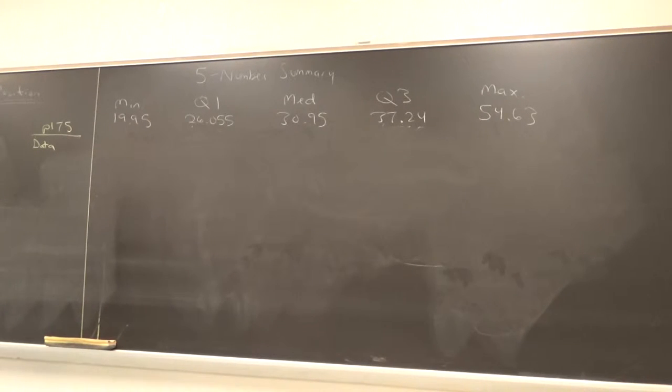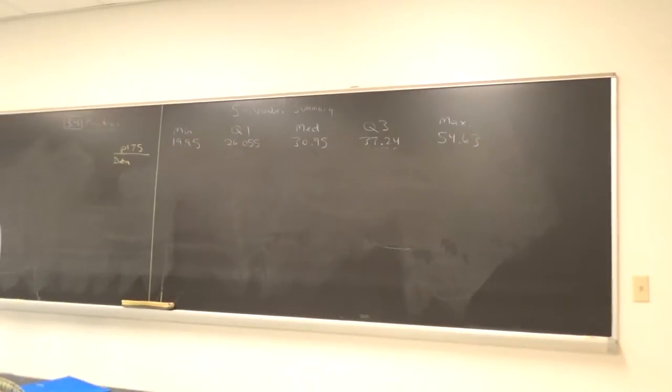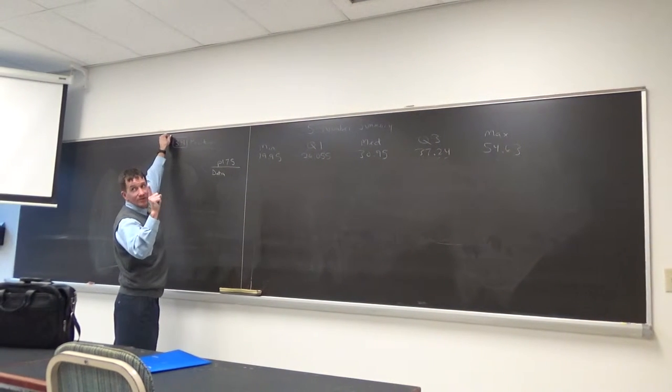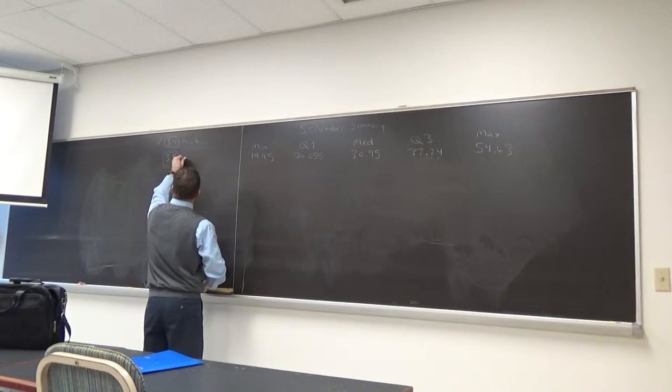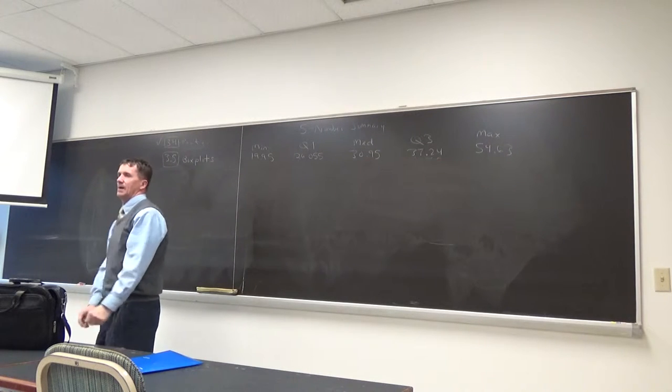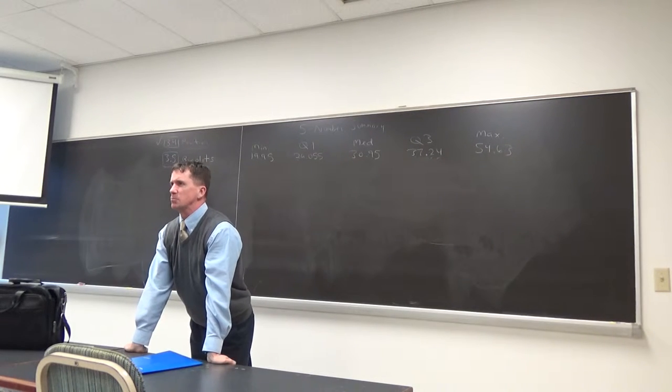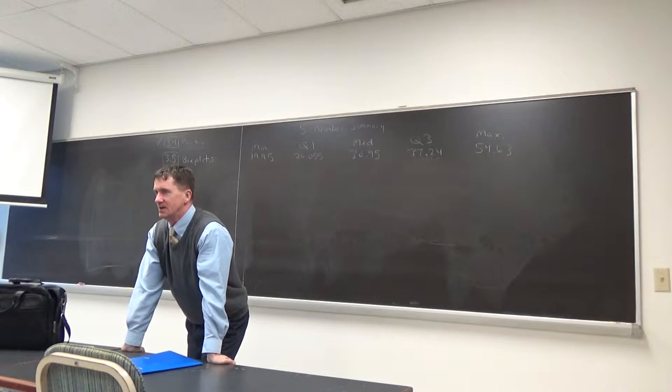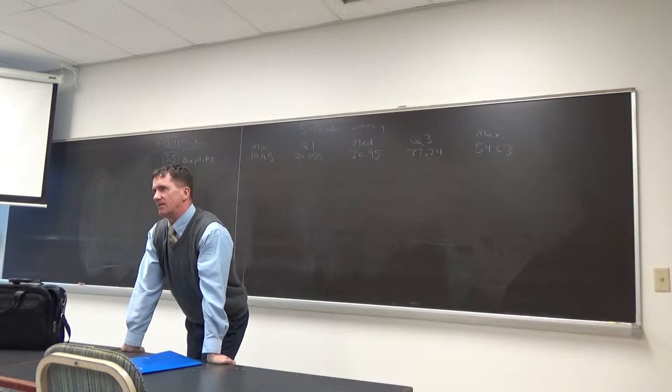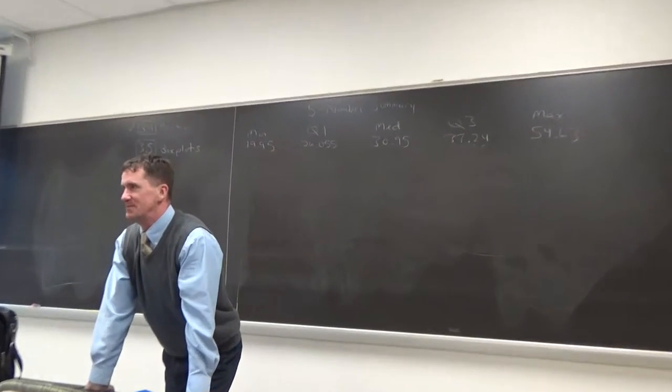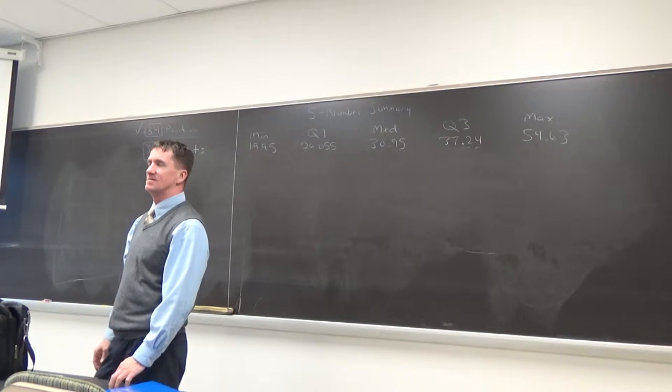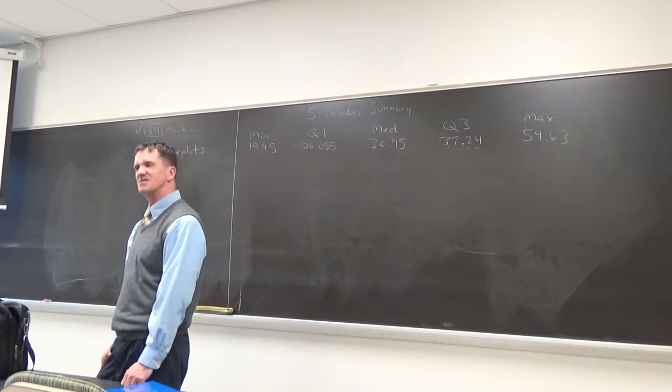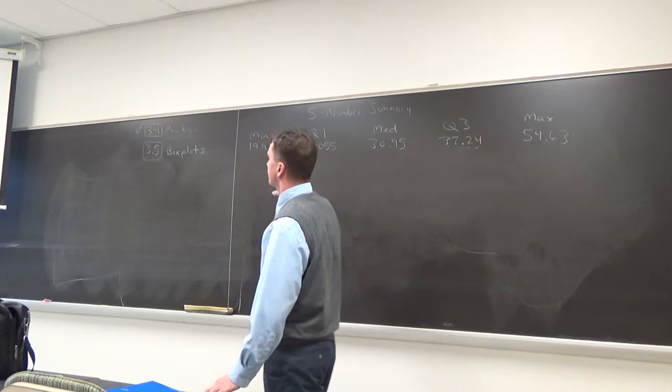You can use technology to come up with your five number summary. Of course, we can do it by hand as well, if you prefer. Have like a scientific calculator. Any questions on that? So, hey, in your notes, we're done with three four. We're now going to three five. Well, what's that, box plots. I know a lot of you had box plots before. You probably heard of them as box and whisker plots. You heard of that? We'll just call them box plots. This is another way to represent data.